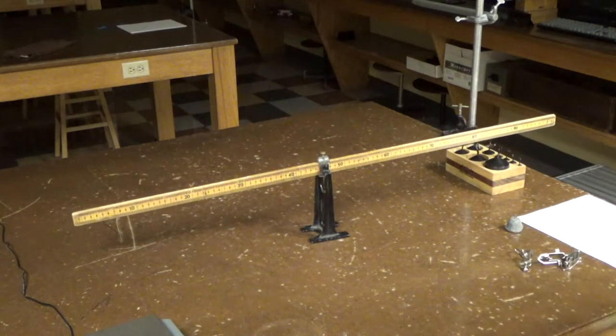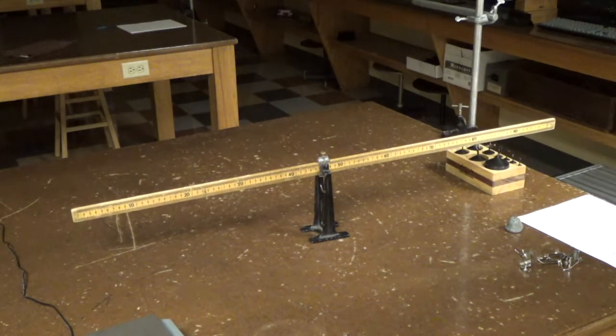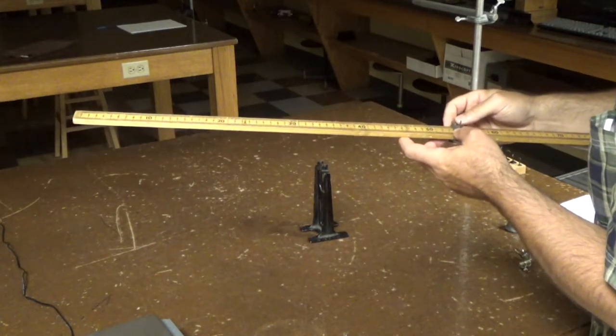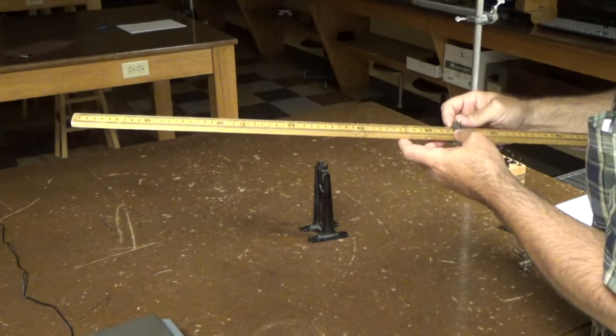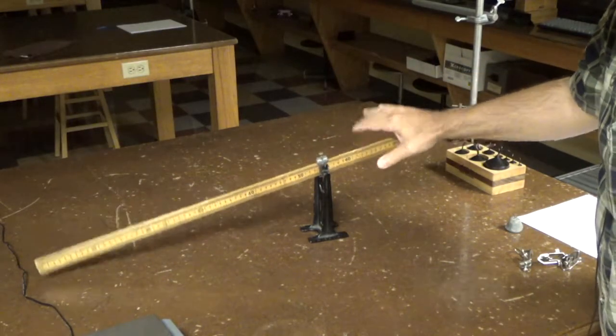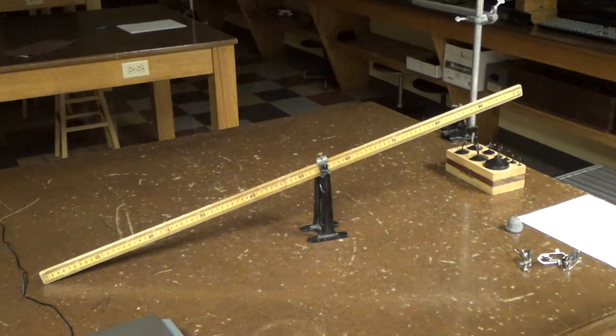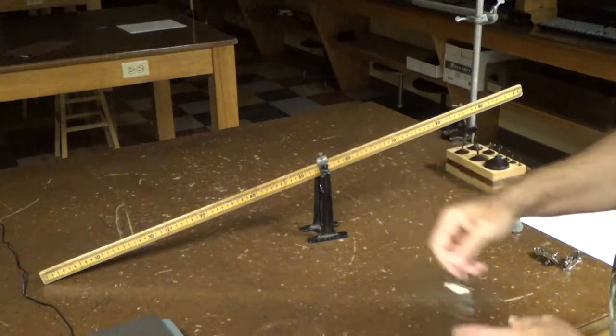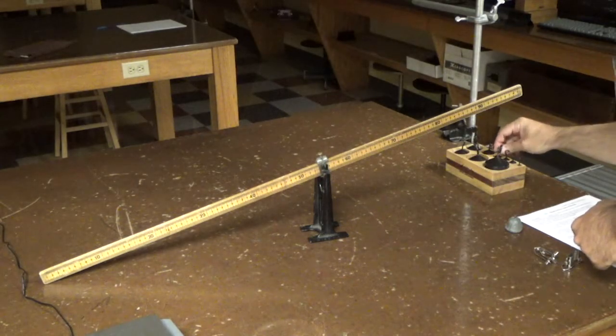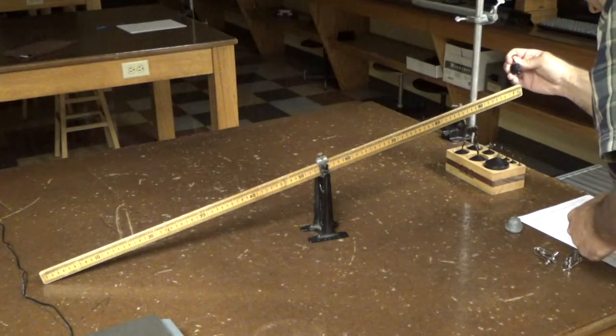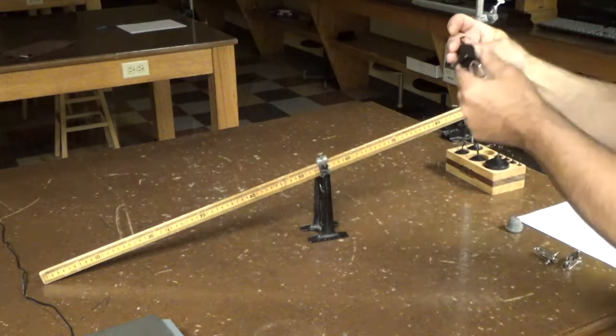Okay, so the next thing you're to do in part one is to move the fulcrum to 55 centimeters. So I've done that right there. And if I put this on, again, the stick goes down. So what we're going to do is we're going to balance this with one of these hanger clips and 100 grams.